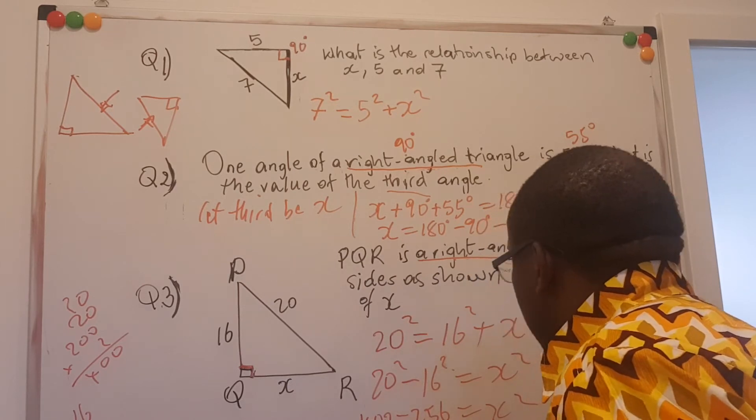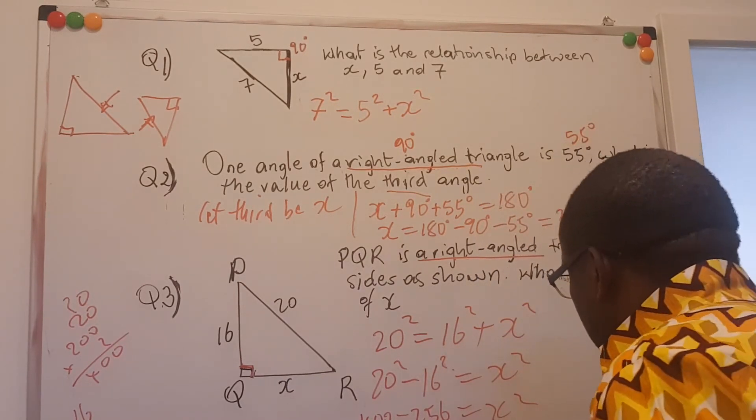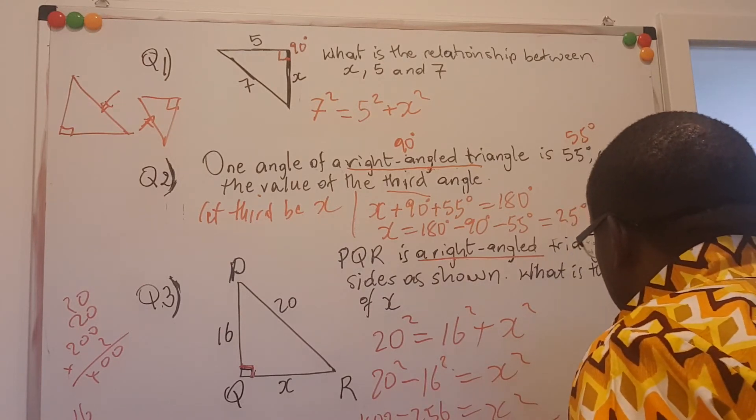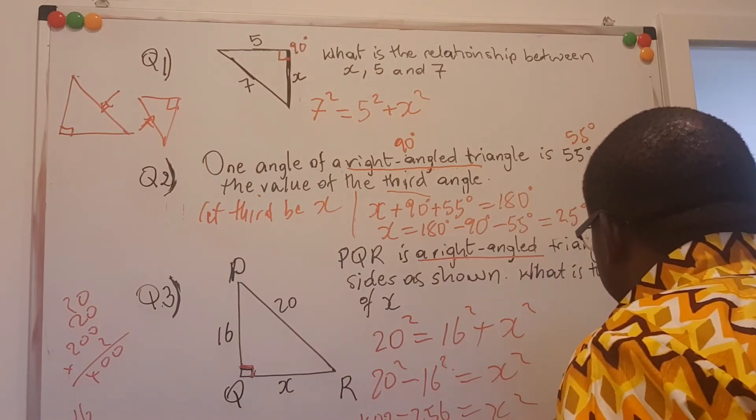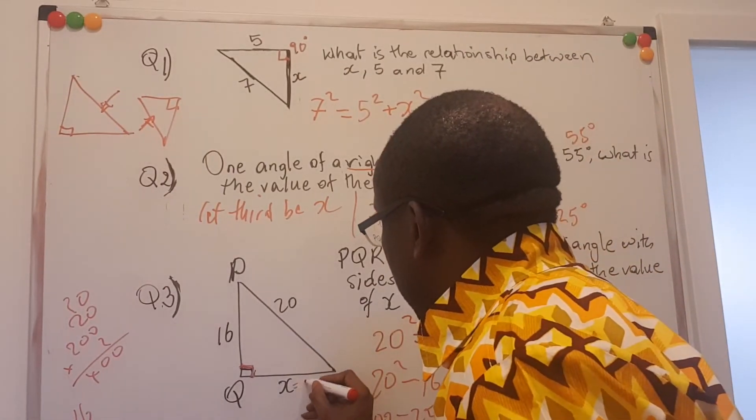So this is 400 minus 256 is equal to x squared. This is 144. It's equal to x squared. So my x is equal to the square root of 144, and that is equal to 12. So x here is equal to 12.